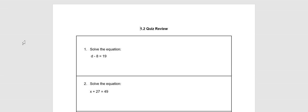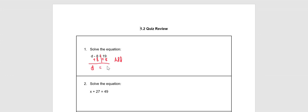Here you are solving the equation in number one: d minus 8 is equal to 19. In order to eliminate negative 8, we take the inverse operation. The inverse of negative 8 is positive 8, so we add 8 on each side of the equation. We bring down our d, and 19 plus 8 is equal to 27.